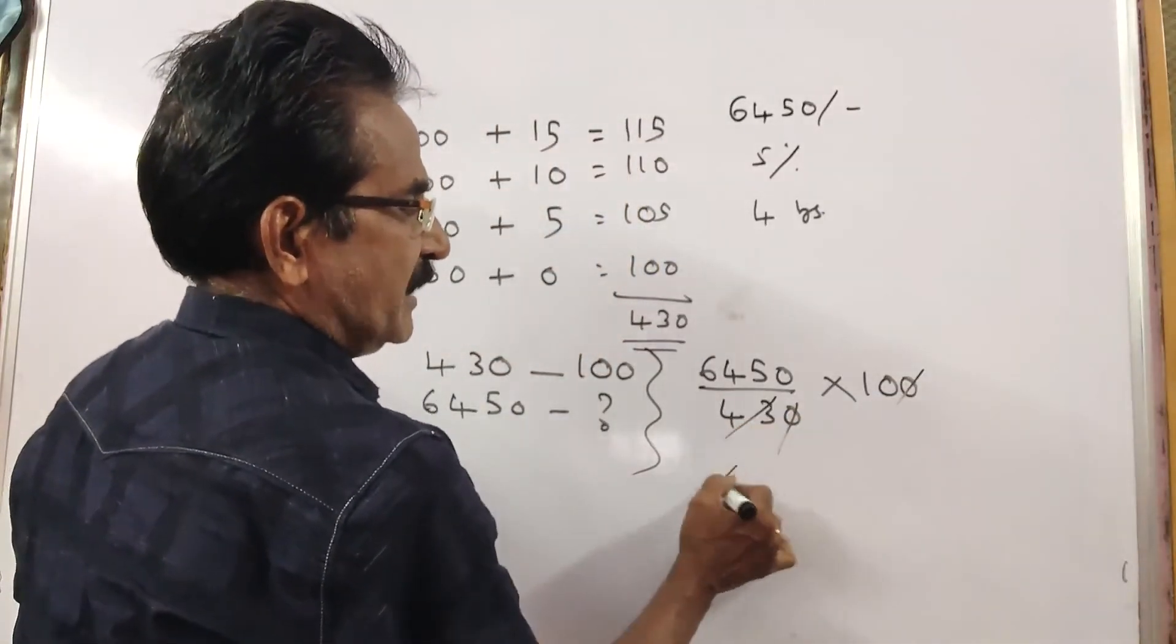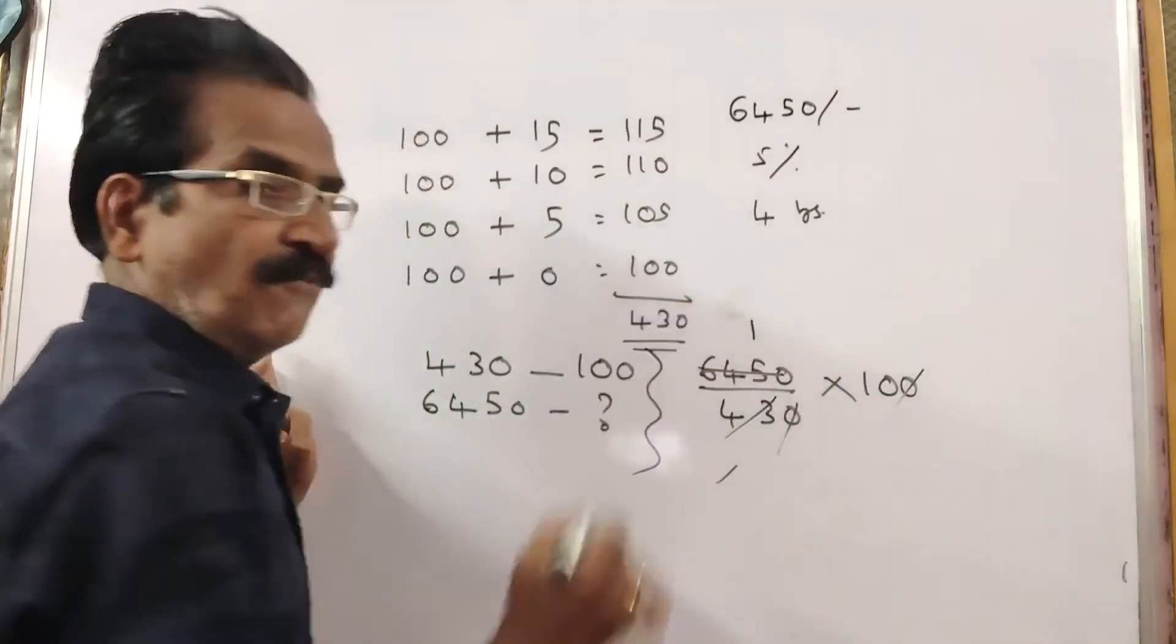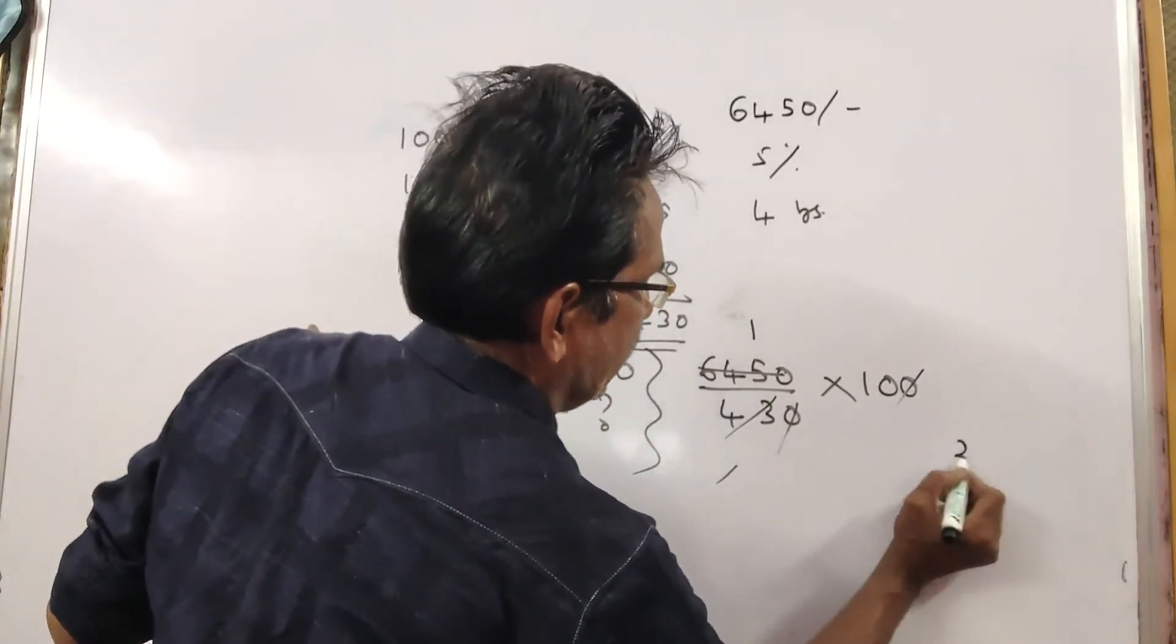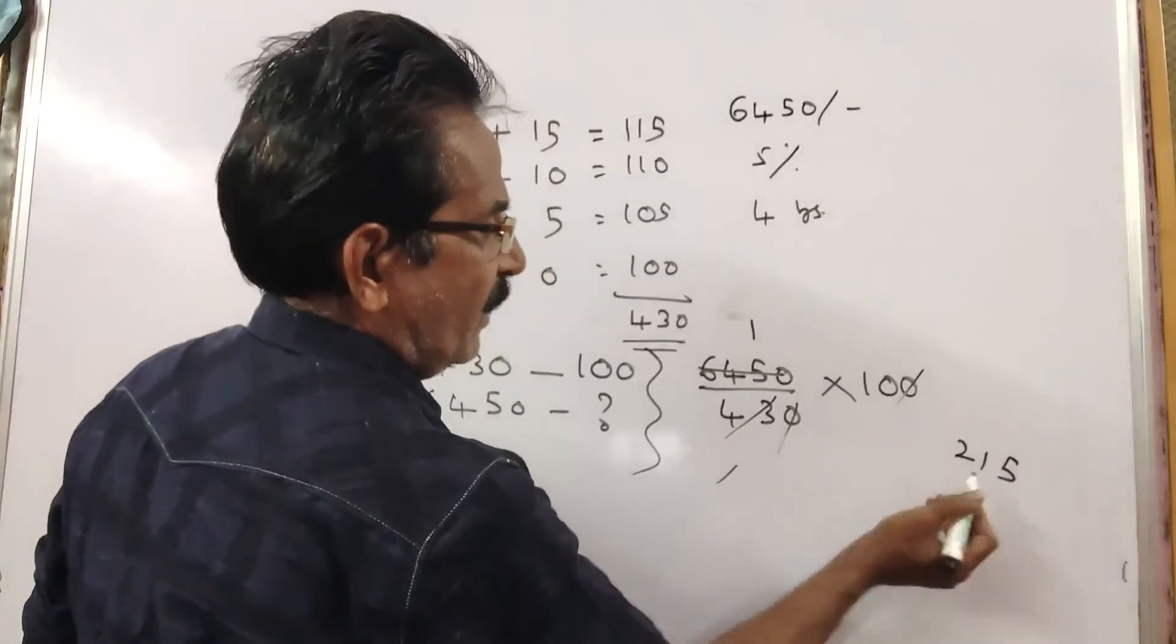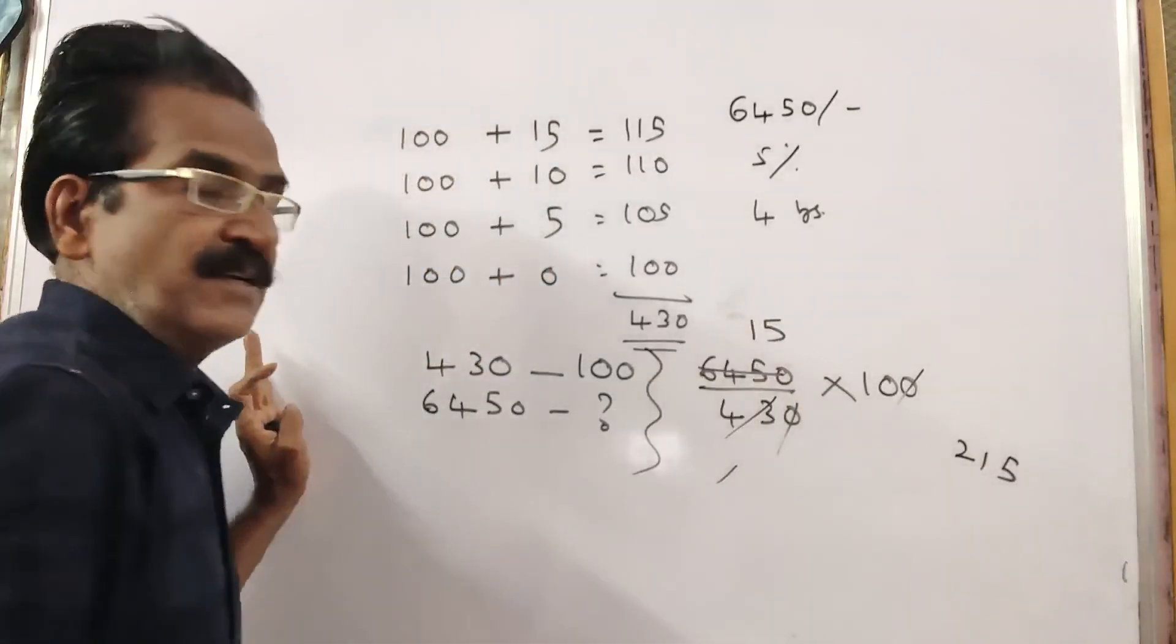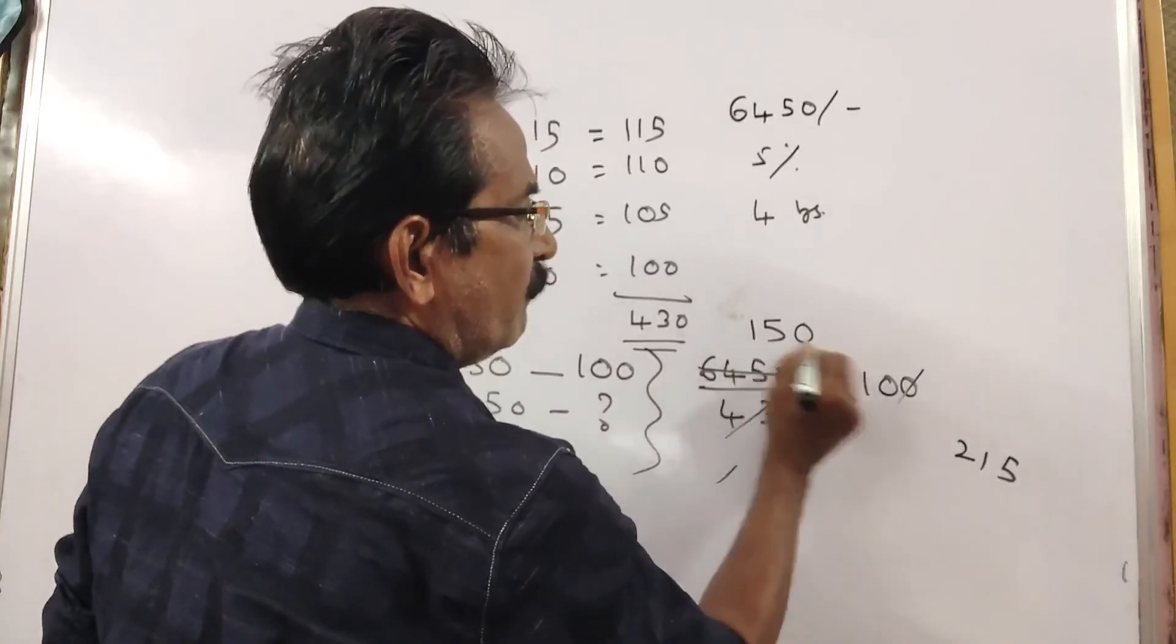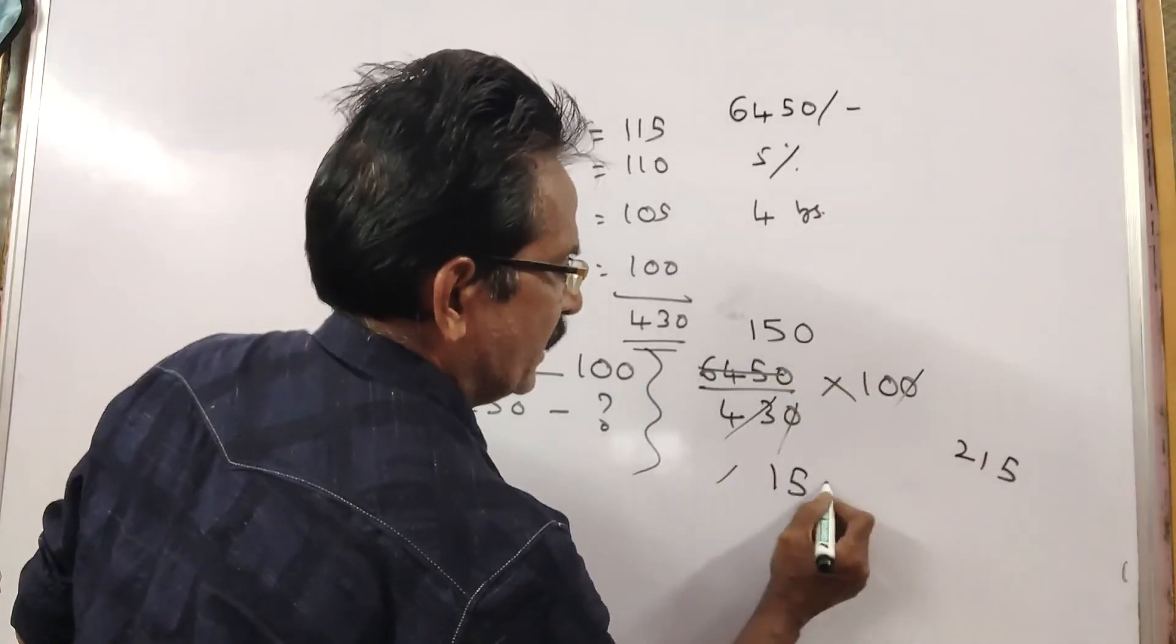0, 0, cancel. 43, once 43. Then 64 minus 43, 21. 25, 43 fives, 15. 43 fives, 15. So, 0. 1, 15 to 10, 1,500.